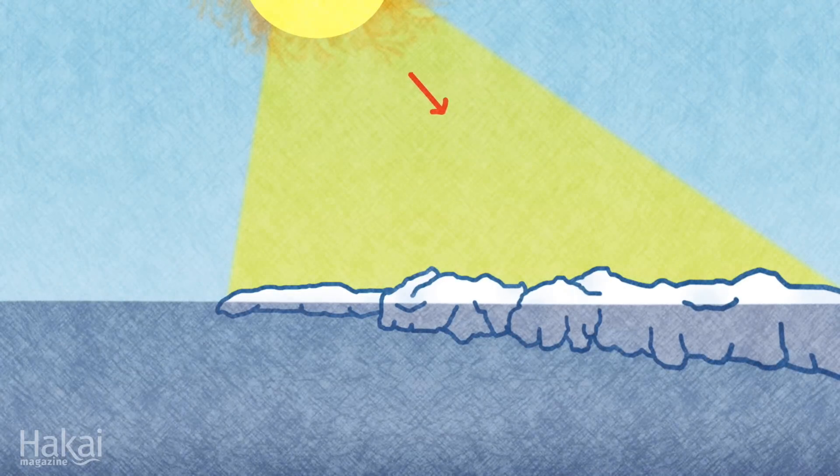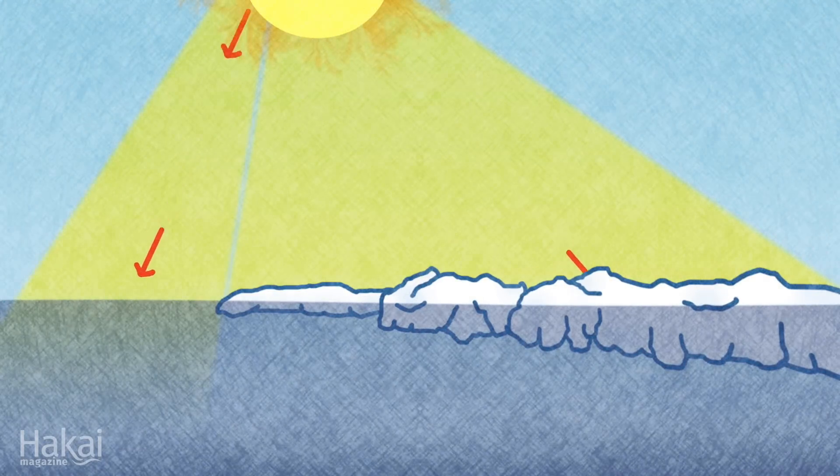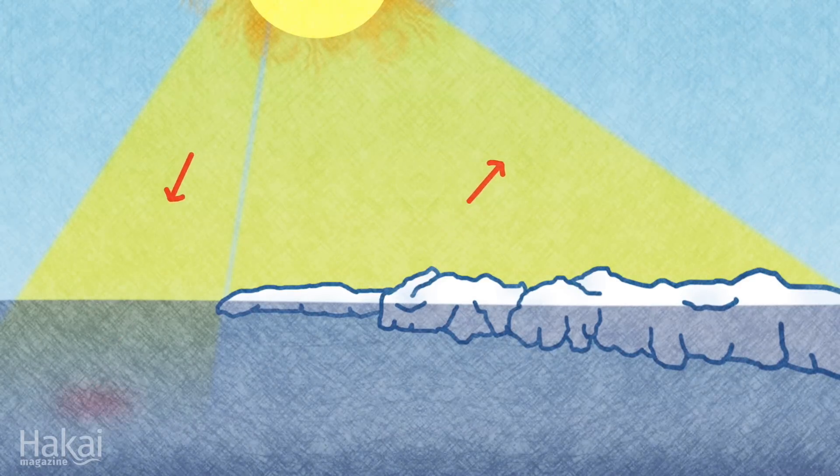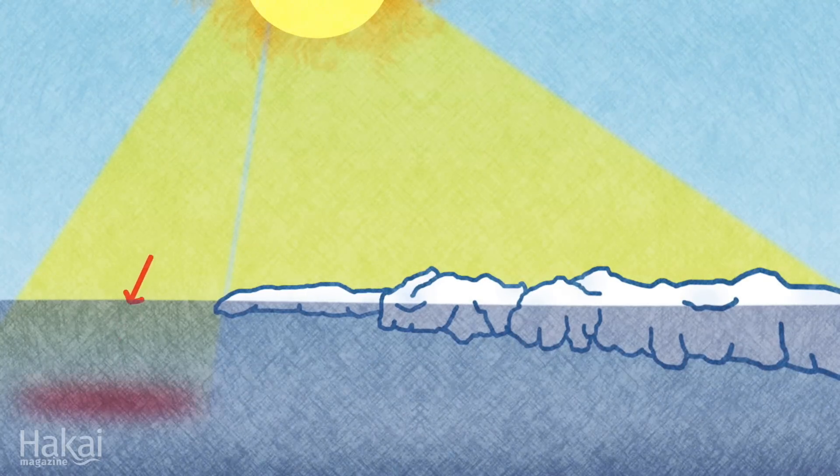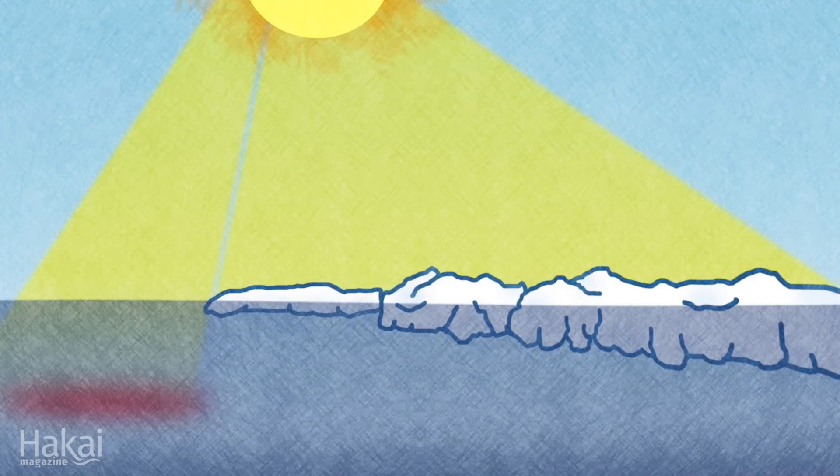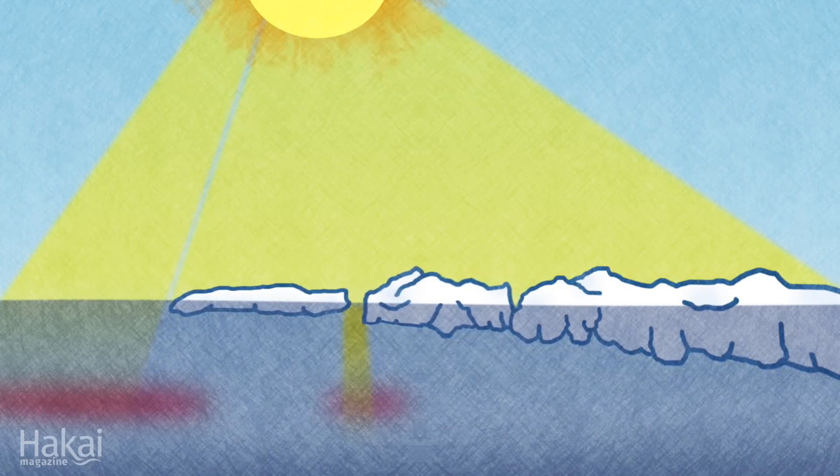The sun, besides directly melting the ice, is also warming the ocean water. Water is much darker than snow or ice, so it absorbs much more of this heat. And as more ice melts, the sun can reach larger areas of the ocean's surface.